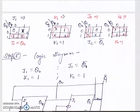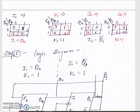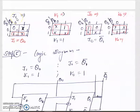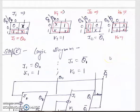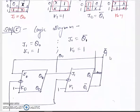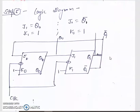As explained in the previous video, we draw the K-map for the inputs of all the flip-flops in terms of present state — that is Q0 and Q1 — and determine the inputs J1, K1, J0 and K0. After that, the logic diagram is drawn for the running counter design.